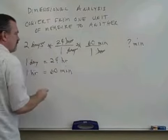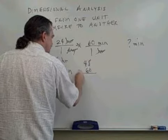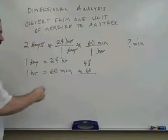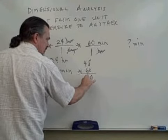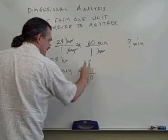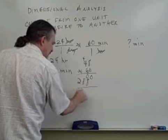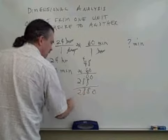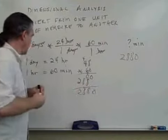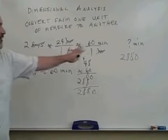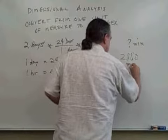And two times 24, I think I can do that one in my head. That's 48. And 48 times 60. 0 times 8 is 0. 0 times 4 is 0. 6 times 8 is 48. 8 and carry the 4. 4 times 6 is 24, and 4 is 28. So two days is equivalent to 2,880 minutes.